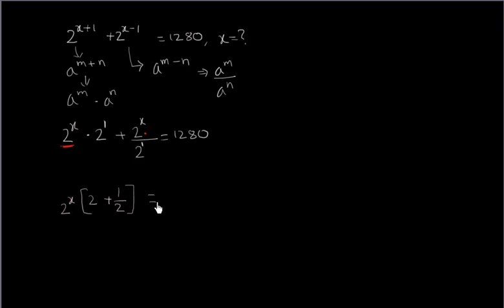This equals 1280. So 2 to the power x into 2 plus 1 by 2, which is nothing but 5 by 2, equals 1280.